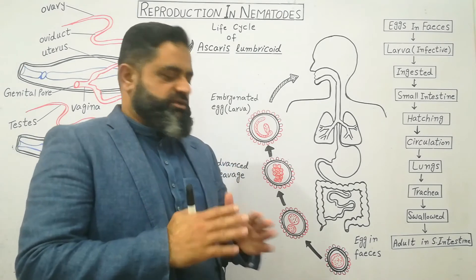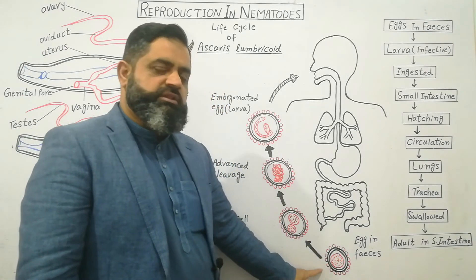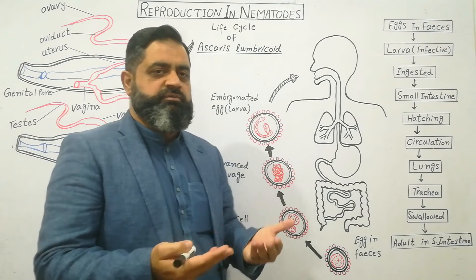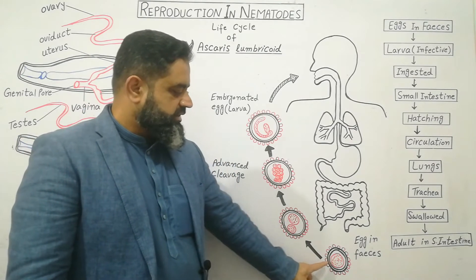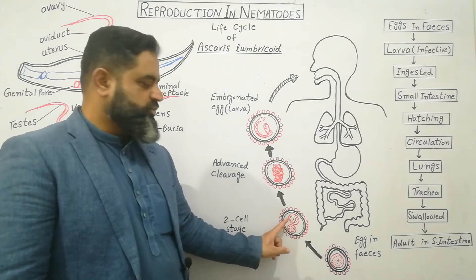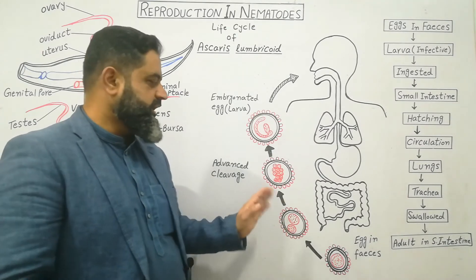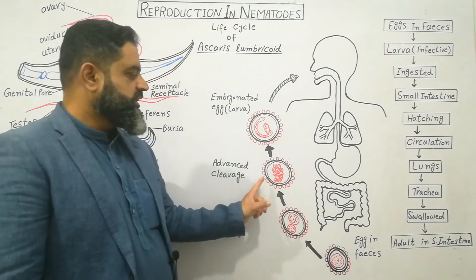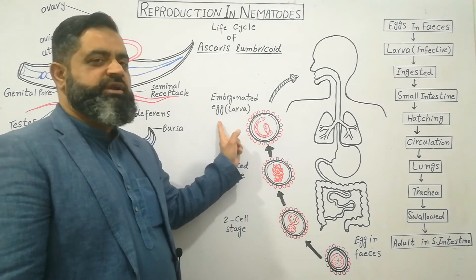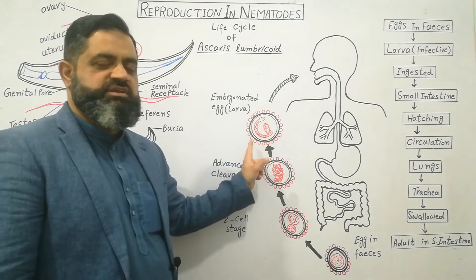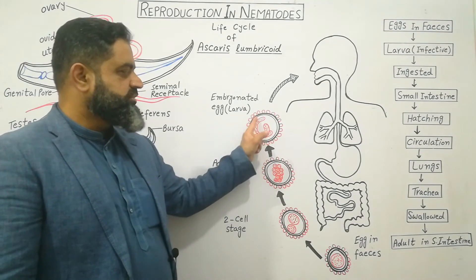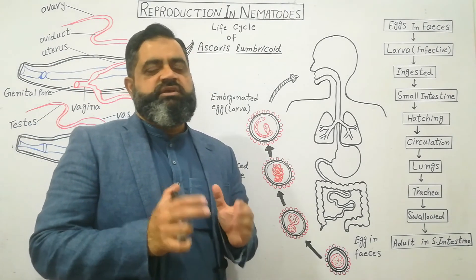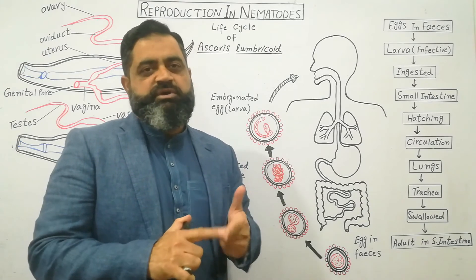In the surrounding external environment, these eggs are present in the soil. These eggs undergo cleavage or mitosis for the purpose of growth. The single cell of the egg divides into two cells and then divides mitotically many more times through advanced cleavage, eventually becoming a larva. After some time, this egg is converted into an embryonated egg containing a larva — this is called the second stage larva. At this stage, the larva has been produced inside the egg, and this embryonated egg is ready to be ingested by a human being.